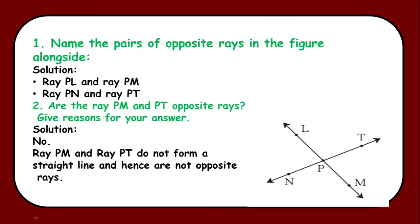So here we have the first question as name the pair of opposite rays in the figure alongside. Now children here if you observe this point P, emerging from point P we have ray PL and PM. Now we need to check the conditions.